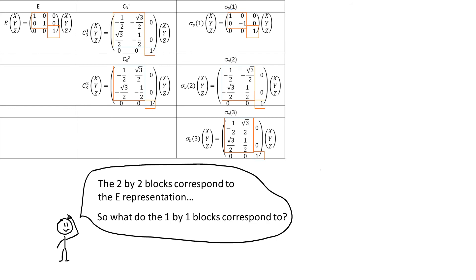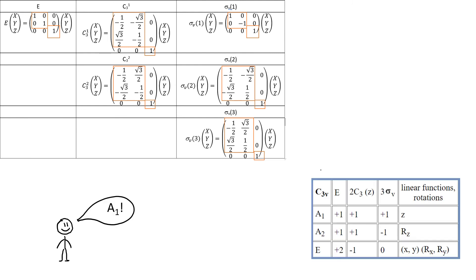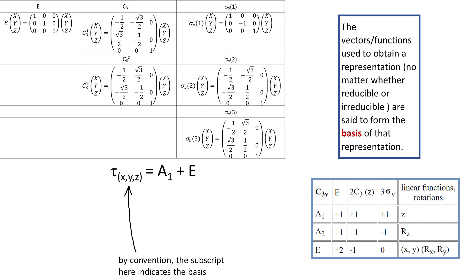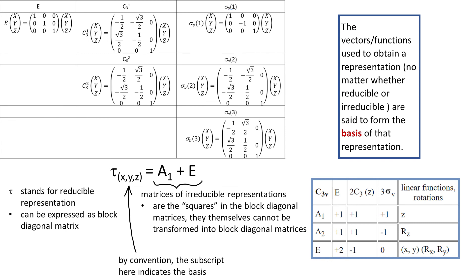We know that the 2x2 block corresponds to E representation. So what is the 1x1 block? The entries are 1 1 1, so that would be A1, and indeed when we look at the character table we see that z is described by A1. So we can write it down like that. Tau xyz equals E plus A1. xyz are the basis of our representation. Just remind you, the vectors, functions used to obtain the representation, reducible or irreducible, are said to form the basis of that representation. And also please recall that tau is a symbol used for reducible representation. The 3x3 matrices are reducible because they can be brought into this block diagonal form, and the blocks are the irreducible representations. So irreducible representation is a representation that cannot be reduced more, cannot be forced into a block diagonal form.